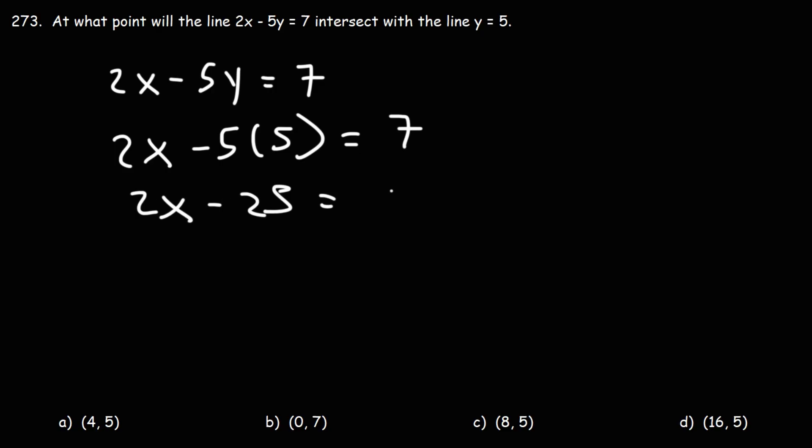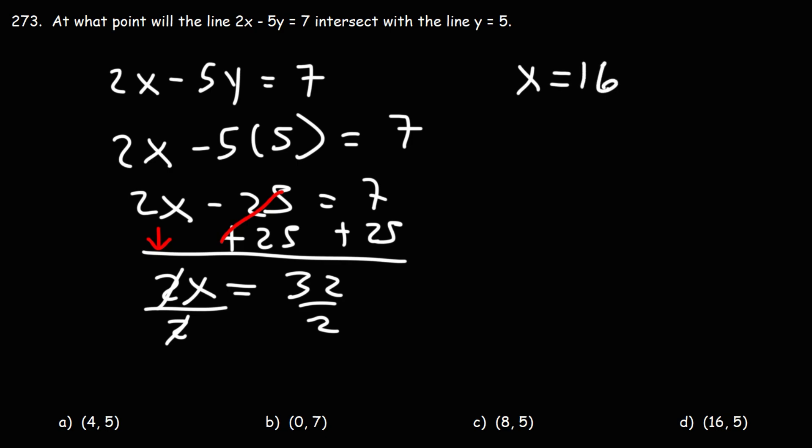5 times 5 is 25. Now, let's add 25 to both sides. These will cancel. We can bring down the 2x. 7 plus 25 is 32. Let's divide both sides by 2. 32 divided by 2 is 16.